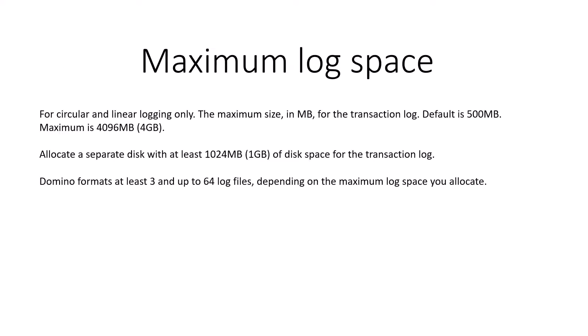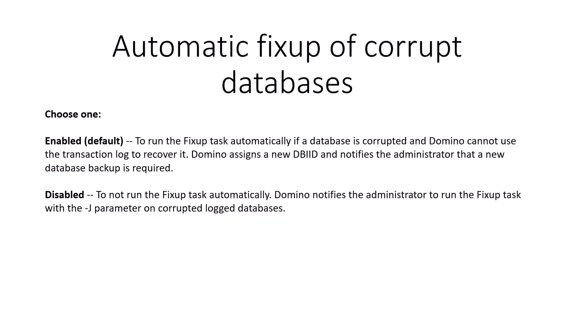The second option is maximum log space for circular or linear logging only — the maximum size in MB. For the traditional log, the default is 500 MB and maximum is 4 GB (4096 MB). Allocate at least 1024 MB (1 GB) for transaction logging. Domino format uses at least 3 or 4 and up to 64 log files depending on the maximum log space you allocate.